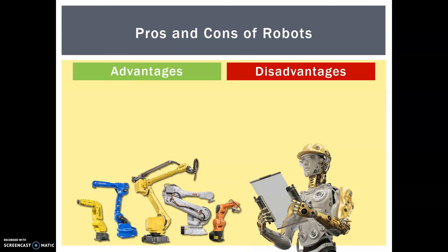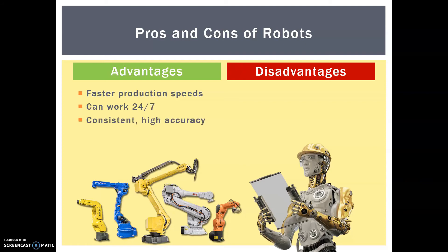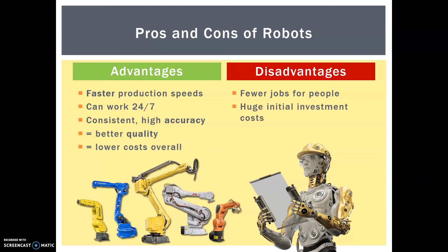Hopefully you found that video interesting. You saw there the use of robotics and particularly robotic arms. There are advantages and disadvantages of both. If you include robotics and machinery you have faster production speeds — these machines can often work 24/7, which is particularly important for continuous production. You have consistent high accuracy and therefore better quality and lower costs overall. However, we're not involving people, so we're actually reducing the number of jobs. There is a huge initial investment cost — each of these robots can be in the hundreds of thousands or more. And we've lost that human judgment: if something is about to go wrong, the robot will just continue and doesn't know better.